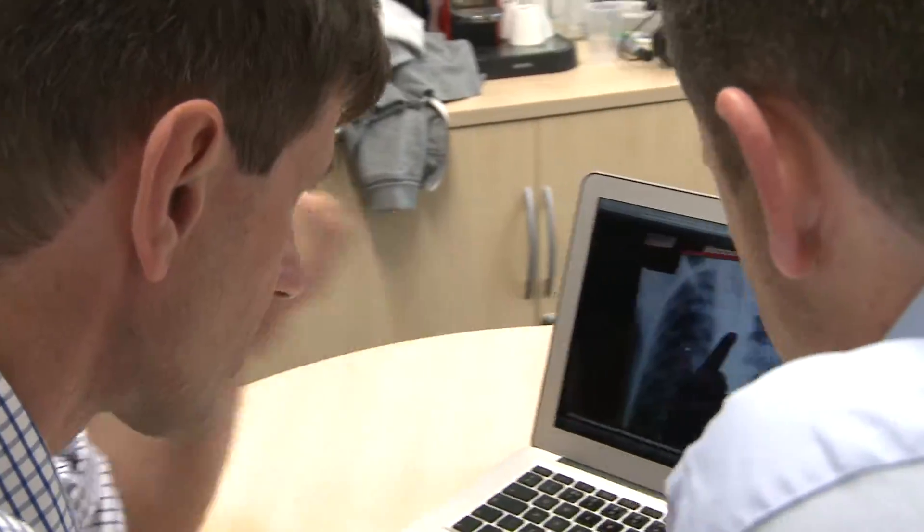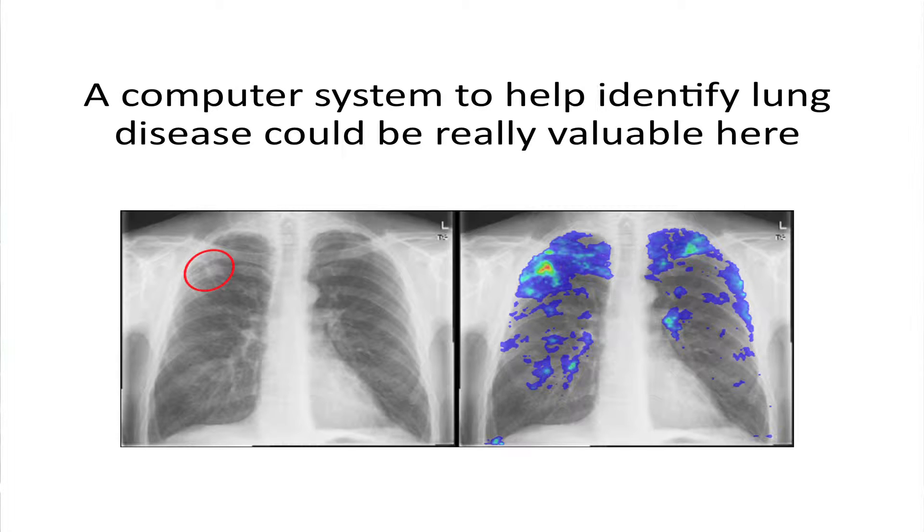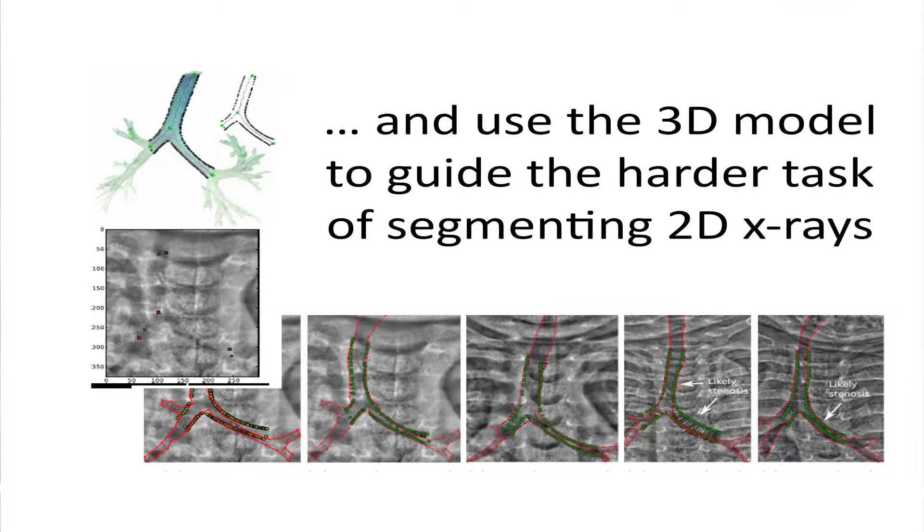As Alistair has said, this project is looking at TB, which is a very exciting and challenging application. It's one of the big killers in the developing world and also a significant problem in London. Through Alistair's Find and Treat project we have a huge database of chest x-rays. We've already had a PhD student analyse CT scans — 3D images — to build 3D models of the variation in appearance between people with TB and without TB. Our intention is to use these models to guide the interpretation of 2D x-rays and build a computer aided diagnosis system that helps radiologists interpret 2D chest x-rays, significantly improving sensitivity and specificity.